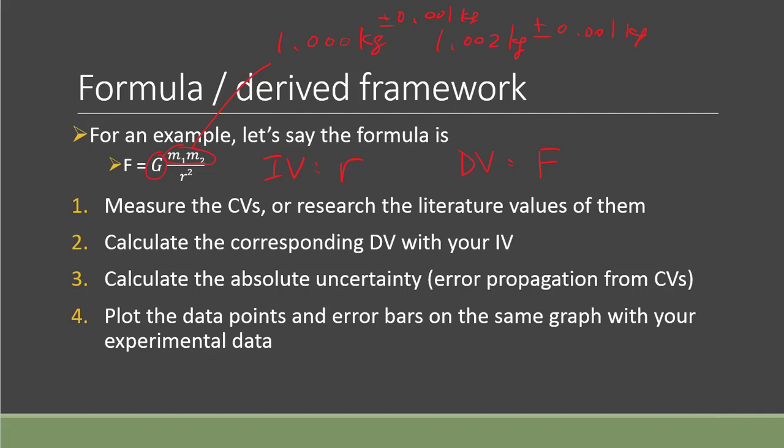For some values you cannot measure, like depending on your IA topic, some can't be measured directly or depend on the material itself. Like G here, you can simply research to find a trustworthy source on the value. And if you can try to find the absolute uncertainty also so you can use it later. If you really cannot find it, maybe you can use the last digit, but that's not very ideal.